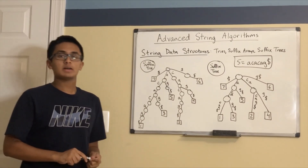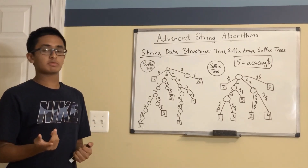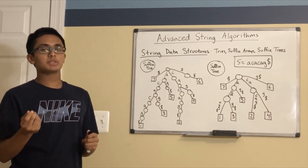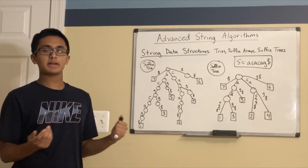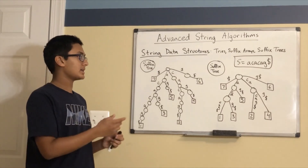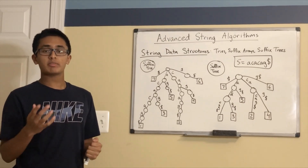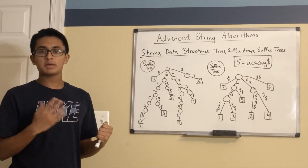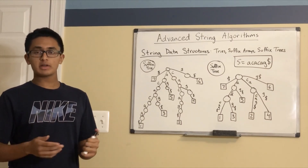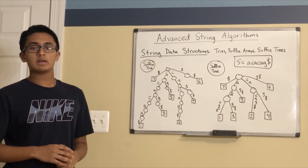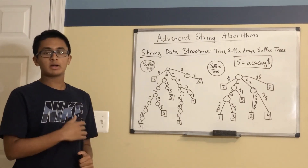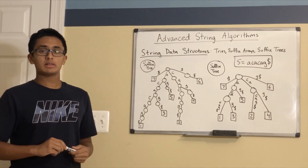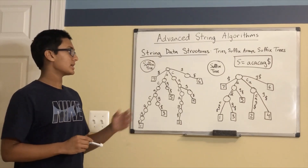The drawback to using suffix trees is that they're tricky to implement in a contest setting, so it may not be a good idea to take the risk of implementing one under time pressure. However, given a suffix tree that is already built and ready to use, it can be very useful for increasing the efficiency of algorithms. Next, we'll look at the longest common substring problem that we examined at the beginning of the lecture and solve it using a suffix tree.